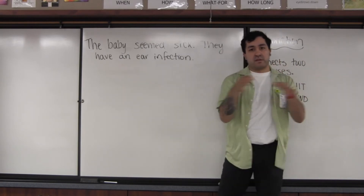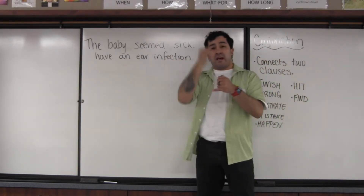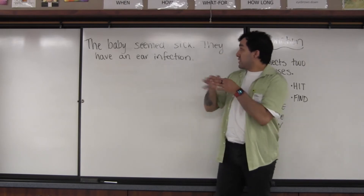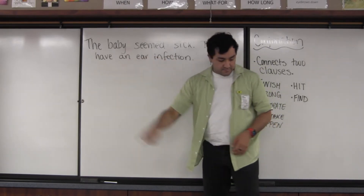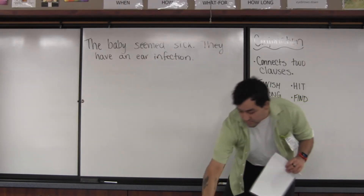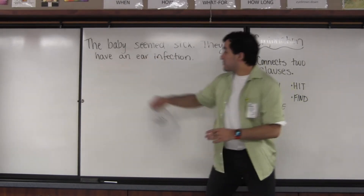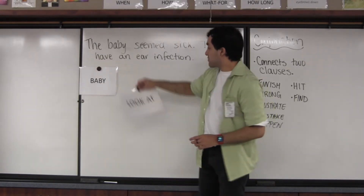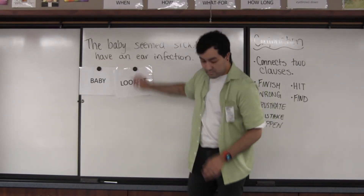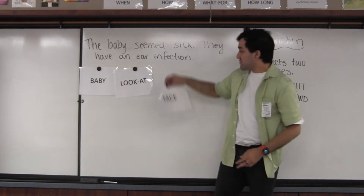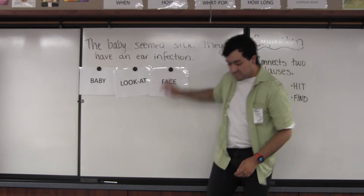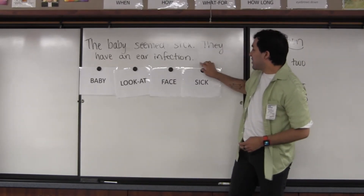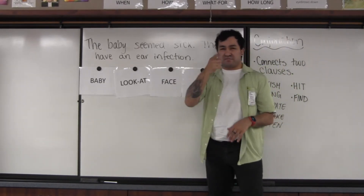So here we go — we have two separate sentences, two separate clauses, and we're going to go ahead and add a conjunction between these two sentences as we translate from English to ASL to make it one whole statement. We're really focusing on the conjunction.